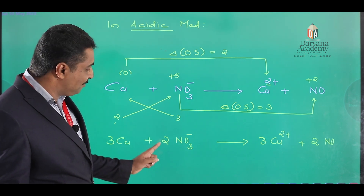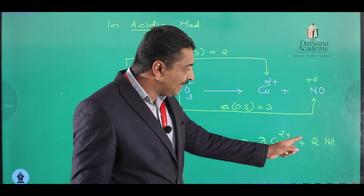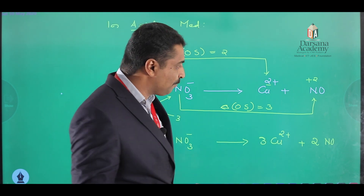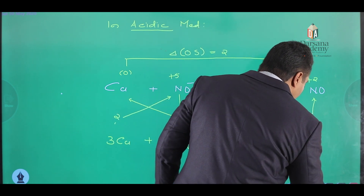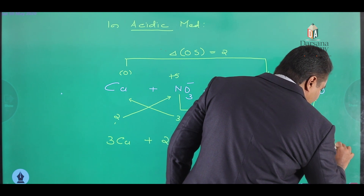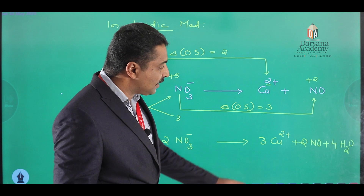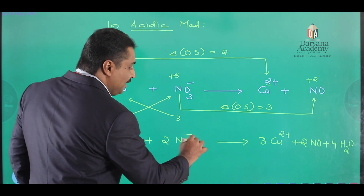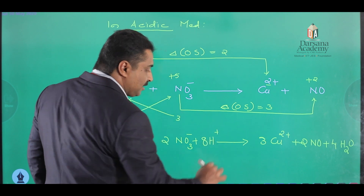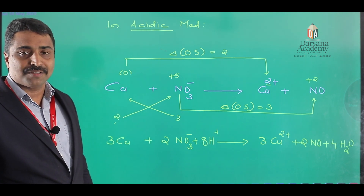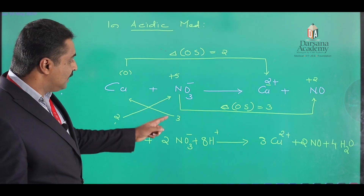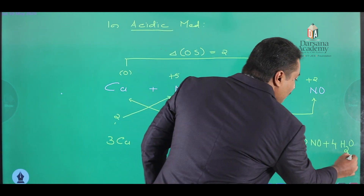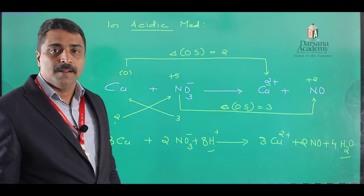On the left-hand side, the number of oxygen atoms is 6 (from 2NO₃⁻), whereas on the right-hand side it is 2 (from 2NO). There is a deficiency of 4 oxygen atoms on the right-hand side, so we add 4H₂O to the right-hand side. This introduces 8 hydrogen atoms on the right, so we add 8H⁺ ion to the left-hand side to balance hydrogen. The redox reaction is now balanced.